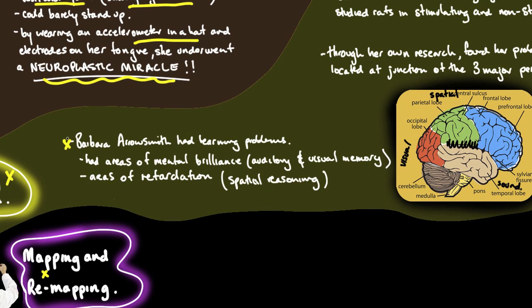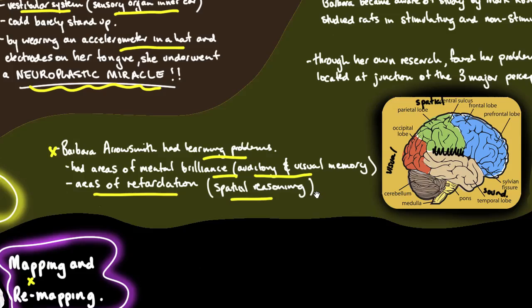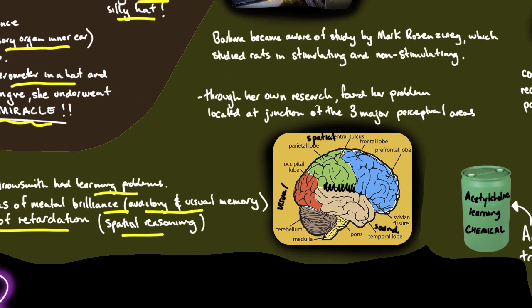Barbara Arrowsmith had learning problems. She had areas of mental brilliance - auditory and visual memory were terrific. But she had areas of retardation, especially in spatial reasoning.